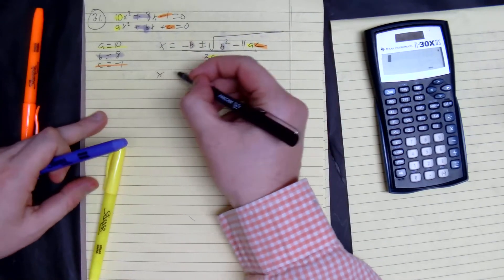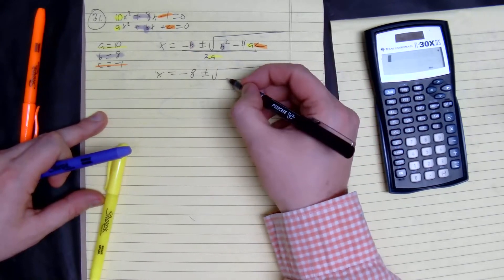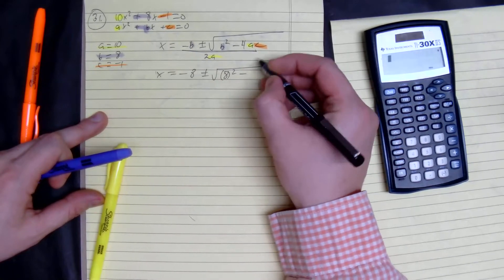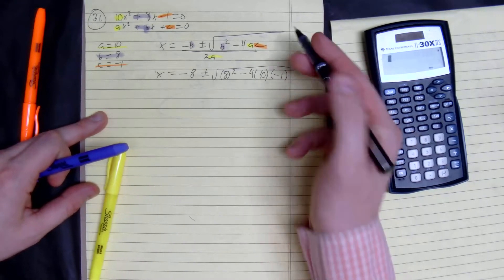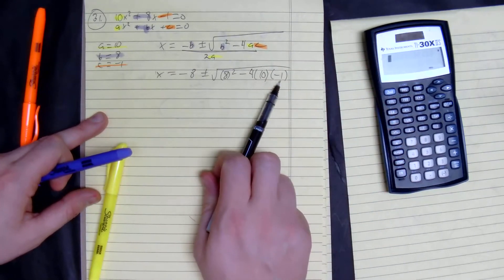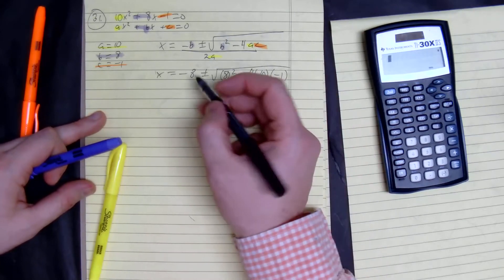We get x equals negative 8 plus or minus the square root of 8 squared minus 4 times 10 times negative 1. Ooh, look at this, a negative and a negative. We're not going to have an imaginary solution, I can tell you that.